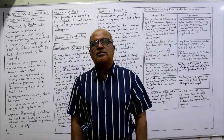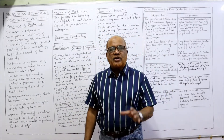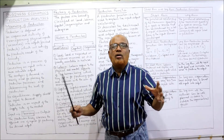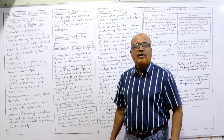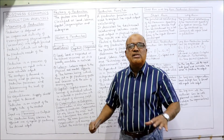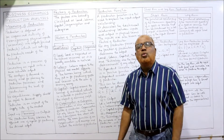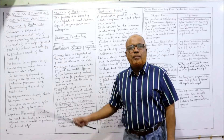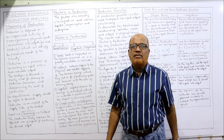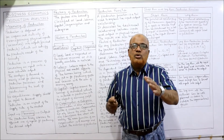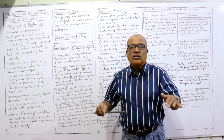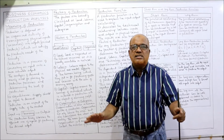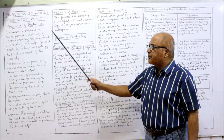First of all, I am going to explain the meaning of the term production. Production is that organized activity in a business organization which transforms the input or resources into output, that is finished goods, which are consumed by users and consumers to satisfy their wants. So production is that organized activity concerned with transforming or changing inputs into outputs.